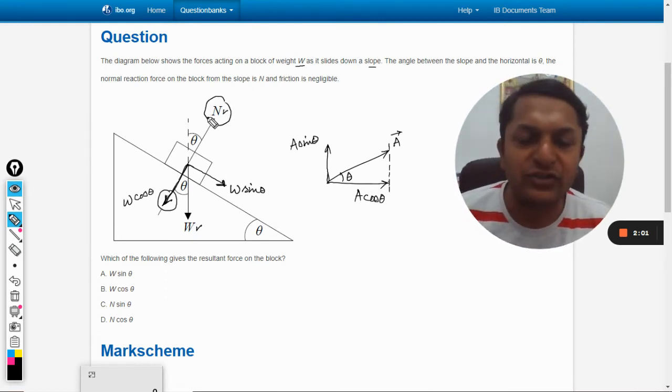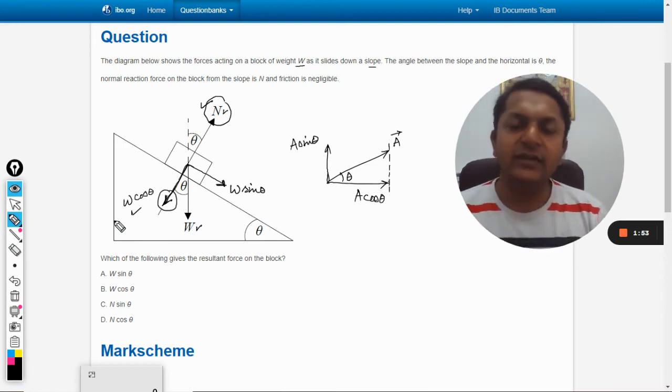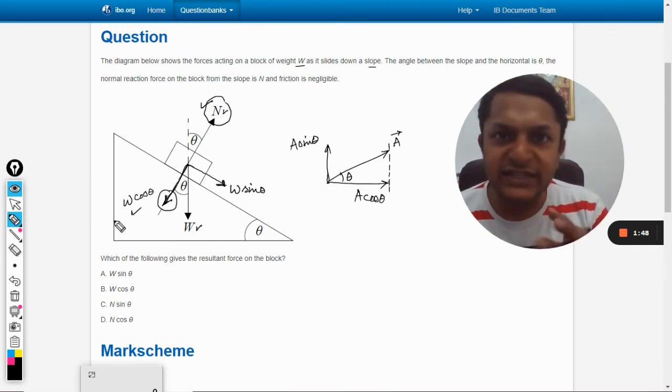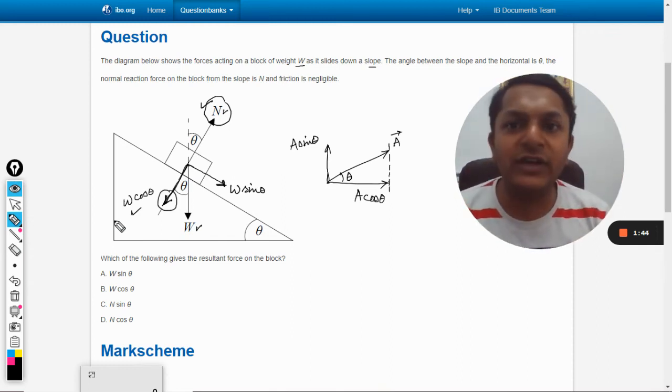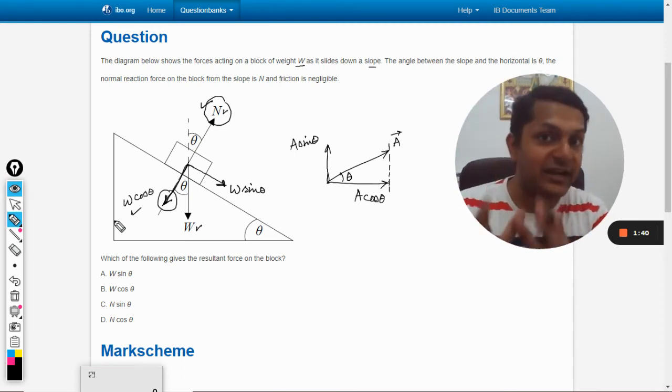So the normal reaction and W cos theta, both of them are equal and opposite and so they cancel each other. So that is why the body is neither moving in the direction of W cos theta nor it is moving in the direction of normal reaction although the forces are acting on them.